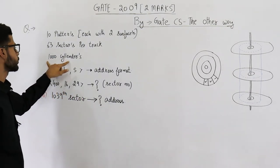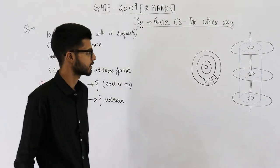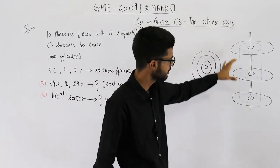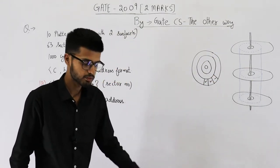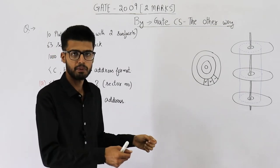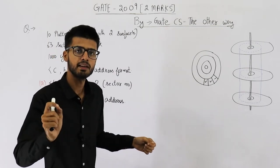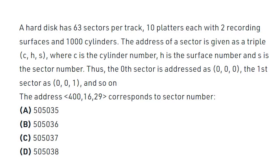There are also 1000 cylinders. What is the meaning of a cylinder? Say the hard disk is placed here. On the top platter, you select the nth track — for example, the 4th track. You then select the 4th track from each and every platter. Equidistant tracks from the center are selected from every platter — this grouping makes up a cylinder.